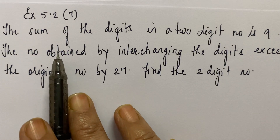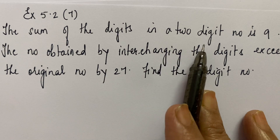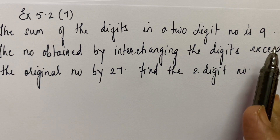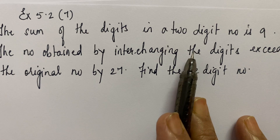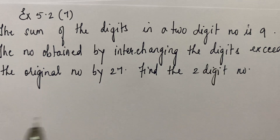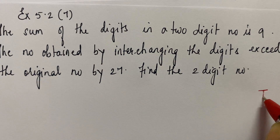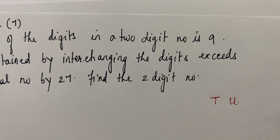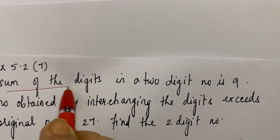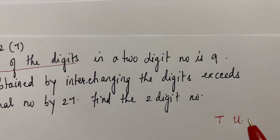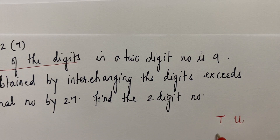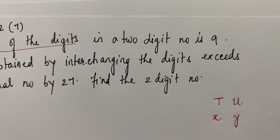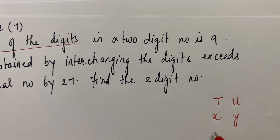The sum of the digits in a 2-digit number is 9. When we are considering a 2-digit number, it will have a tens place and a units place. We are considering the digits as x and y — the digit in the tens place is x and the digit in the units place is y. Then by the first condition, x plus y is equal to 9.